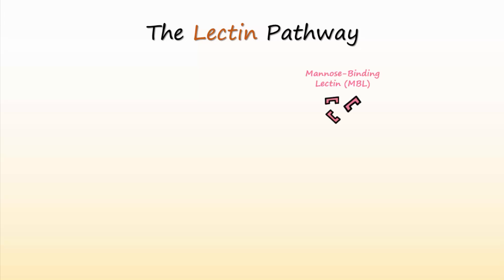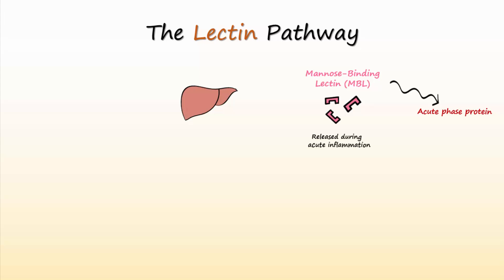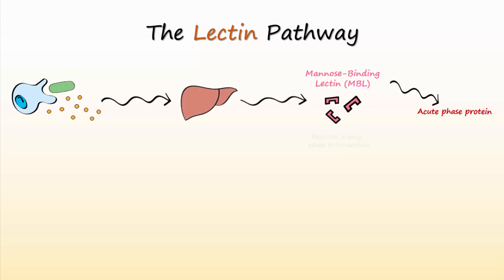The lectin pathway was the last pathway to be discovered. One of the main lectins is mannose-binding lectin, or MBL. MBL acts as an opsonin and also activates the complement cascade. MBL is made by the liver and is one of the factors called acute phase proteins, released under conditions of inflammation. When macrophages and neutrophils phagocytose bacteria, they release cytokines into the blood that travel to the liver and stimulate it to produce MBL.